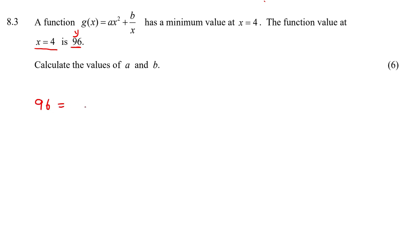Let's start with that immediately. We'll plug in 4 for x and we'll plug in 96 for y. Then I would just simplify this a little bit. So 16a, because that gives me 16, plus b over 4. That can be our first equation.